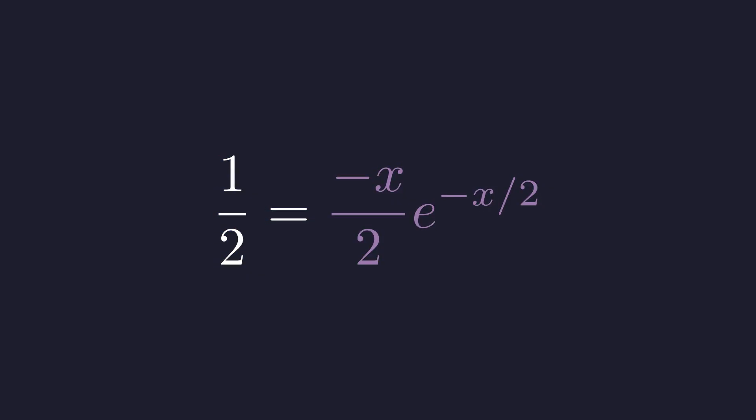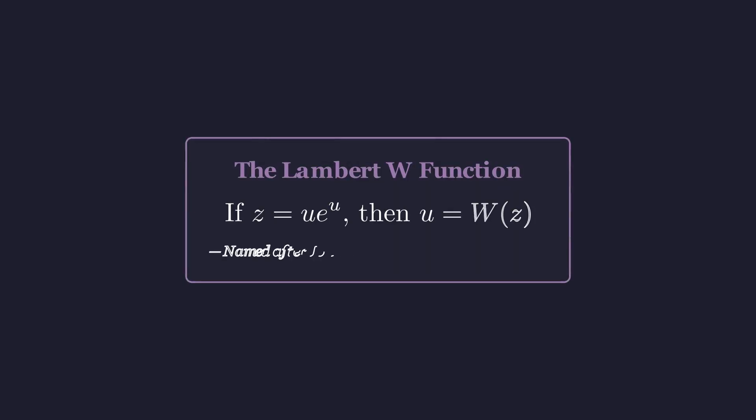Look carefully at this pattern. We have a variable times e to that same variable. This specific form has a special inverse function. Enter the Lambert W function. It's defined as the inverse of the function u times e to the u. So if z equals u times e to the u, then u equals W of z.